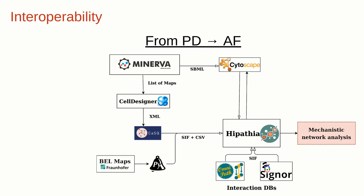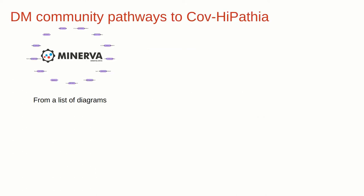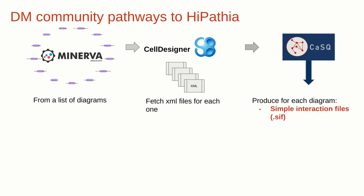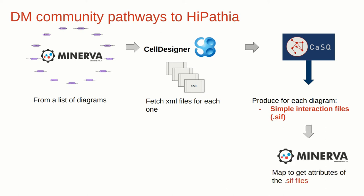Our main challenge was converting process description graphs into activity flow graphs that the Hypathia method can handle. We managed to convert COVID-19-related Minerva graphs, BioPAX networks, and OmniPath interaction networks. The process involved getting a list of diagrams, fetching the corresponding XML file for each from CellDesigner, and then feeding the XML files to CASQ to produce simple interaction SIF files. These were then mapped back to the original Minerva in order to retrieve details such as a list of entry identifiers for each node.